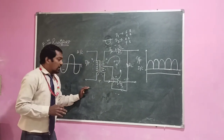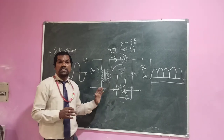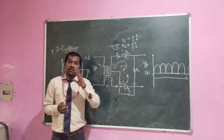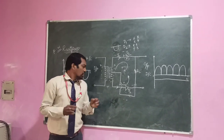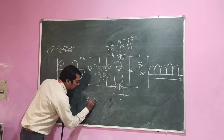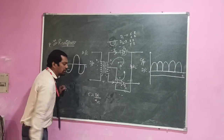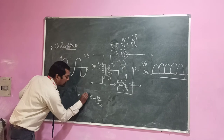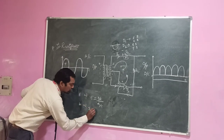The efficiency of the full wave rectifier is 81.2%. The efficiency of the half wave rectifier is about 40–45%. The efficiency formula is DC power divided by AC input power. This is the efficiency of the full wave rectifier.